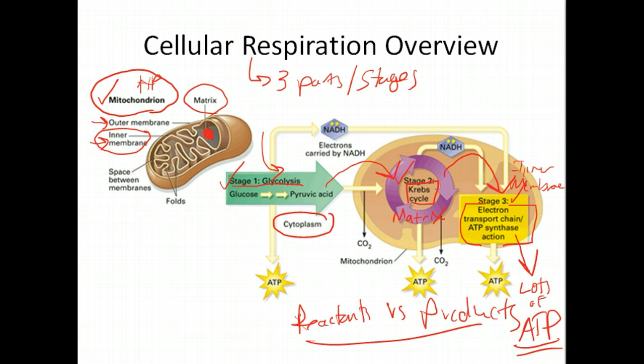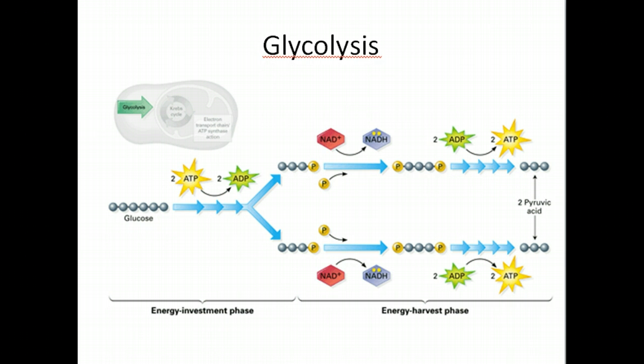The Krebs cycle will create products that are then going to become reactants for stage three for the electron transport chain and ATP synthase. And then this will make a product. And that product is lots of ATP. So that's the overview of this process. We're going to get into a little more details. Now I've broken this first screencast into glycolysis and Krebs cycle. We'll see how we do with that.